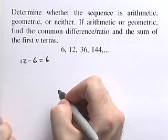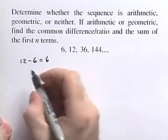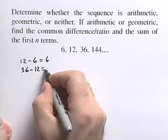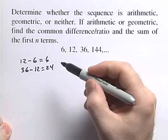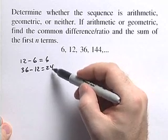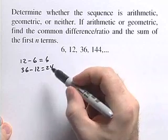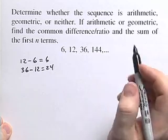So the difference between the first two terms is 6. We go to the next two terms, 36 minus 12 is equal to 24. Now because these are different differences, since the difference between the consecutive terms is not the same, we know that this sequence is not arithmetic.